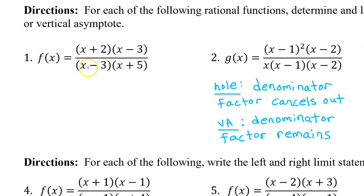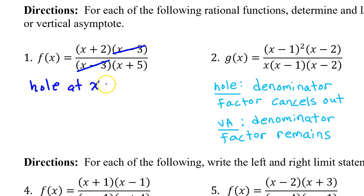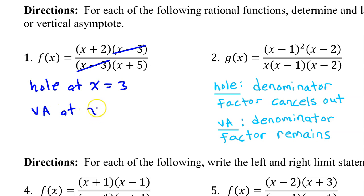We see x minus 3 in the denominator, and because it cancels out with another factor in the numerator, this means we have a hole at x equals 3. Then we see the factor of x plus 5. This one does not cancel out with anything, so we have a vertical asymptote at x equals negative 5.